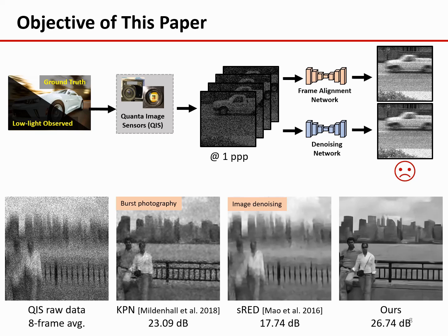In the bottom figure, we show results of a motion-based method kernel prediction network, KPN, and a single frame RetNet denoiser. We can see both methods have their limitations. Our goal is to leverage the strength of both.